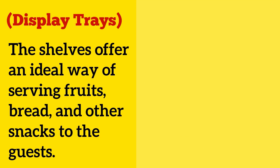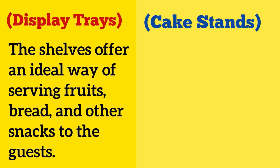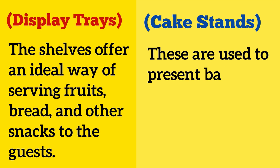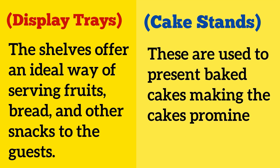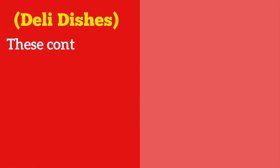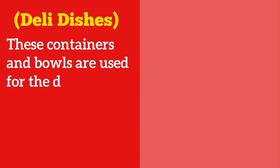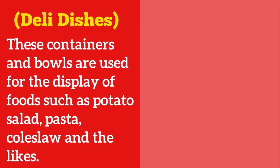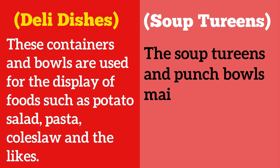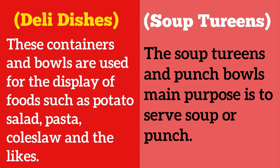Display trays offer an ideal way of serving fruits, bread, and other snacks to guests. Cake stands are used to present baked cakes, making them more prominent. Daily dishes — these containers and bowls are used for the display of foods such as potato salad, pasta, and coleslaw. Soup tureens and punch bowls serve the main purpose of serving soup or punch.